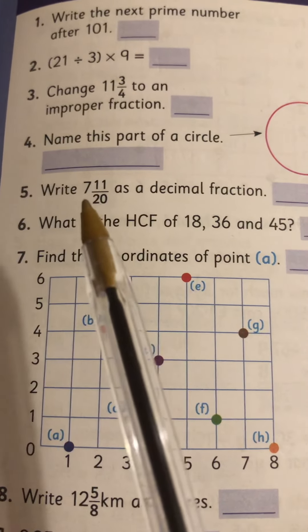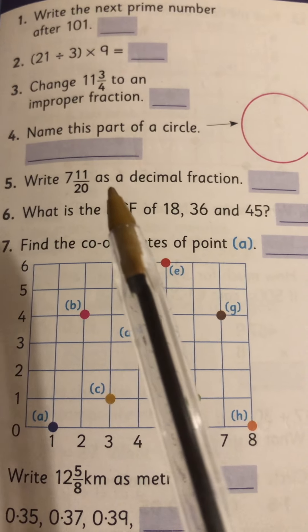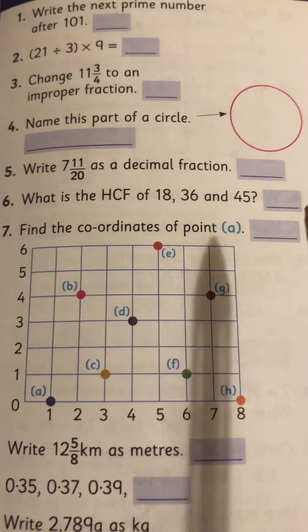So it's 7 and 11 twentieths, so 7 whole numbers and then 0.55, so put them together.